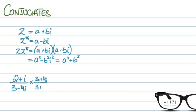So in the numerator, this will be 2 plus Iota into 3 plus 4 Iota. In the denominator, this will be 3 squared minus 4 squared I squared. I squared is minus 1, so I get 3 squared plus 4 squared.